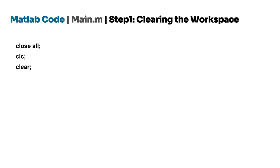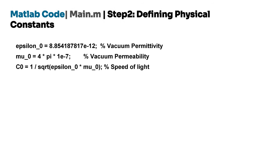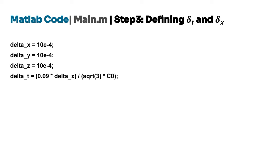Now I'm going to walk you through a MATLAB script that sets up the foundation for a numerical electromagnetic simulation using the FDTD method. In main.m, Step 1 clears the workspace and sets global variables — closing all open figures, clearing the workspace, and resetting the command window. Step 2 defines physical constants including vacuum permittivity epsilon_0, vacuum permeability mu_0, and the speed of light c_0. Step 3 defines spatial grid sizes delta_x, delta_y, delta_z, and the time step delta_t based on the Courant stability condition, which ensures numerical stability. Step 4 defines the frequency of the source wave, calculates the angular frequency omega, and specifies the number of frequency samples nf.